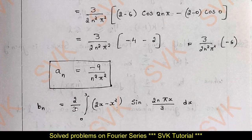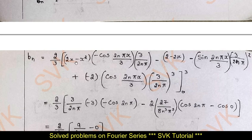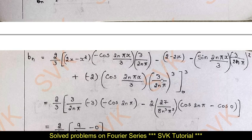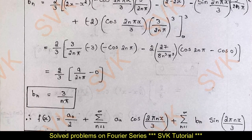bₙ is given by (2/3) ∫₀³ (2x − x²) sin(2nπx/3) dx. Integrating by Bernoulli's (UV) rule: (2x − x²) · [−cos(2nπx/3)] · (3/(2nπ)) minus the derivative (2 − 2x) · [−sin(2nπx/3)] · (3/(2nπ))² plus the second derivative (−2) · [cos(2nπx/3)] · (3/(2nπ))³, evaluated from 0 to 3. After substituting the limits and simplifying, we get bₙ = 3/(nπ).